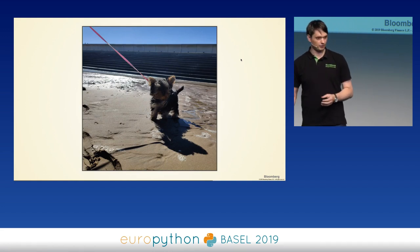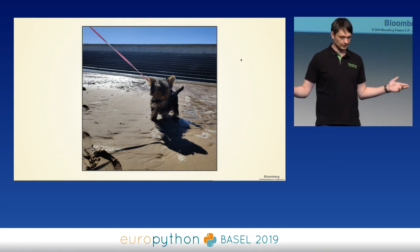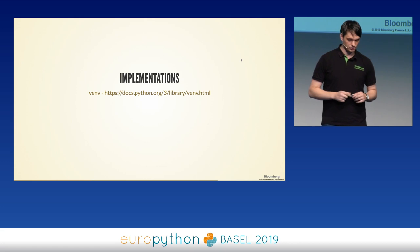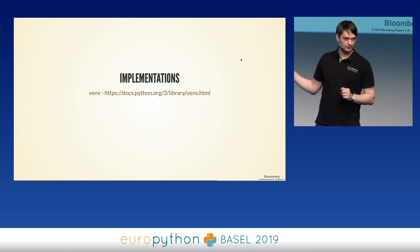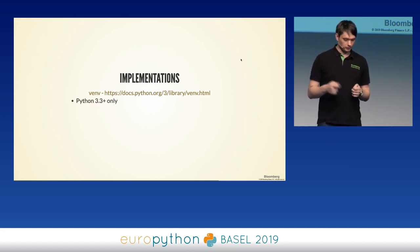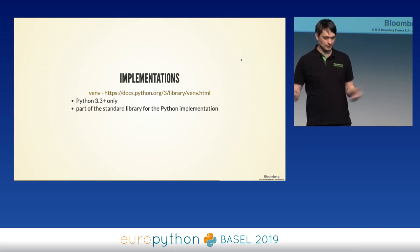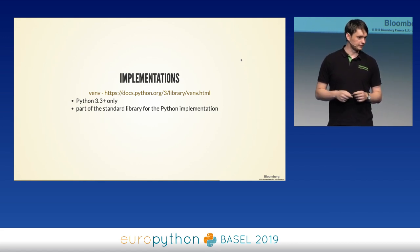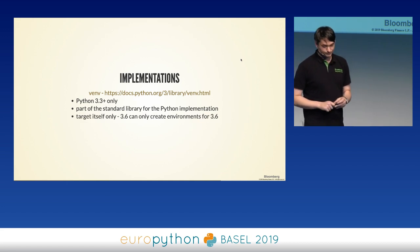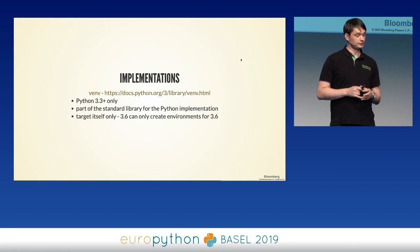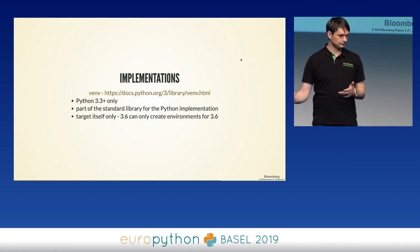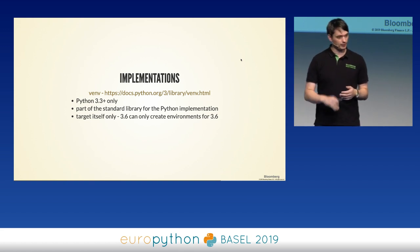Now we have a virtual environment with pip in it. Let's look at implementations. The one recommended for use is venv — a standard library module built into the interpreter, working on Python 3.3 and later only. Python 2 will be deprecated next year, so who cares? It's available in the standard library — mostly, because Debian derivatives decide not to install it. Its main scope limitation is that it can only target itself: to create a Python 3.6 venv, you must have Python 3.6 with venv available.